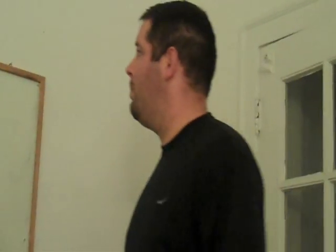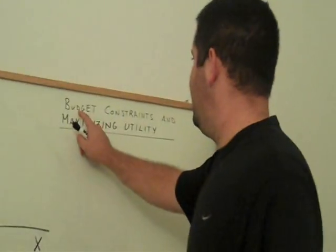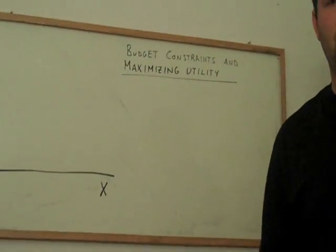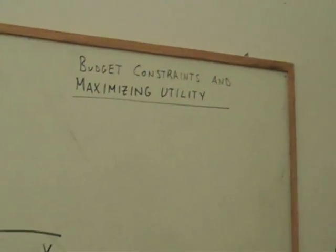In consumer behavior, we have two things that influence behavior. On one side, we have the preferences. On the other side, we have the opportunities, or more precisely, the constraints. We're going to talk about, in this lecture, budget constraints, and then we'll use that in an application of what it means to be maximizing utility.